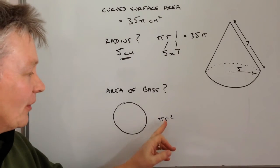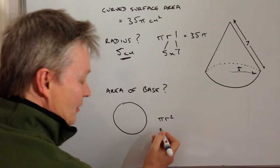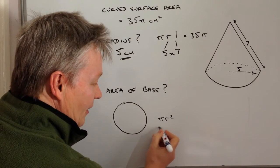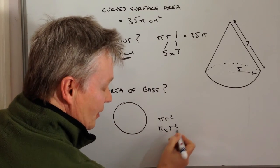Well we've already got the information that it's 5, so therefore it's going to be π multiplied by 5, which is the radius squared.